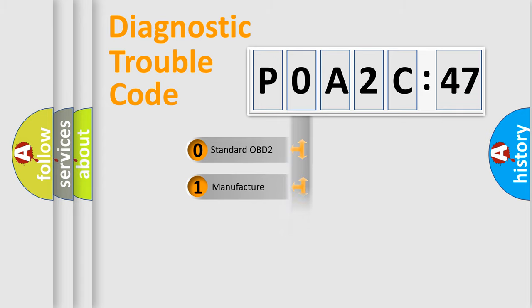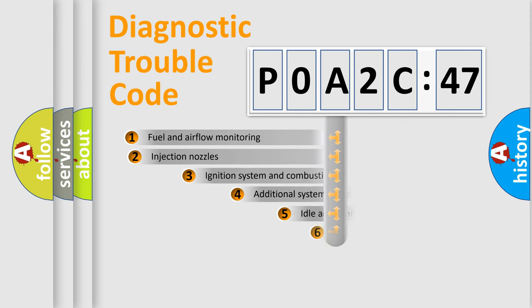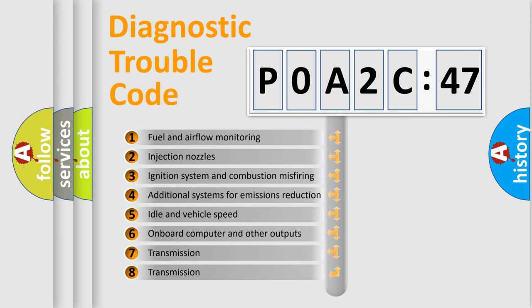Only the last two characters define the specific fault of the group. The add-on to the error code serves to specify the status in more detail, for example, a short to the ground.